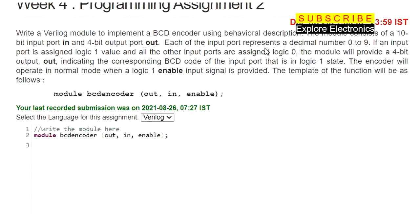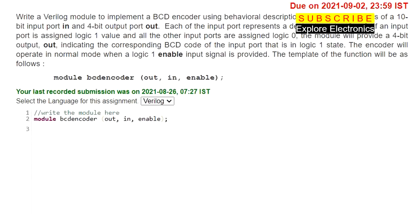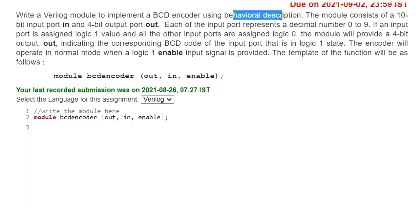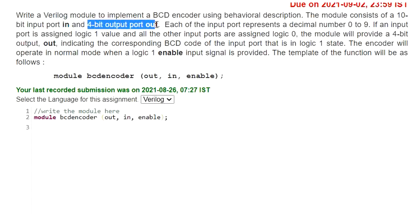Here they have asked to write a Verilog code to implement a BCD encoder using behavioral description. The module should consist of a 10-bit input port named IN and a 4-bit output port called OUT. Each of the input ports represents a decimal value from 0 to 9.